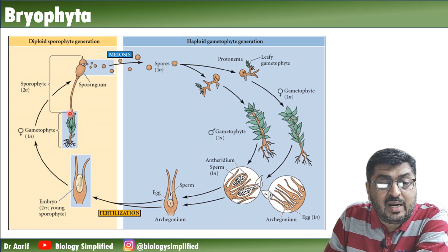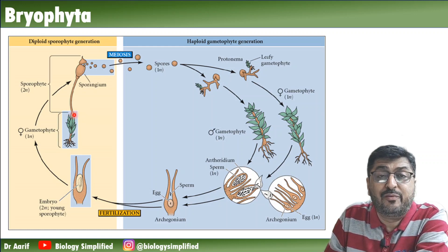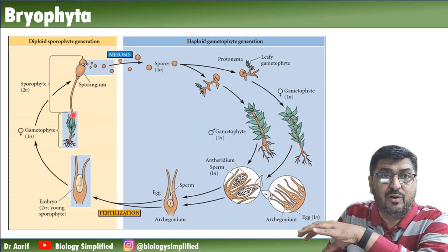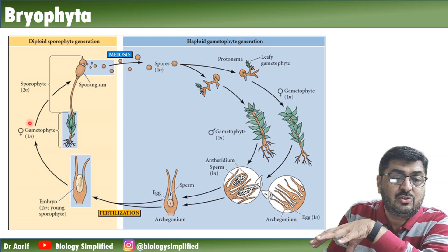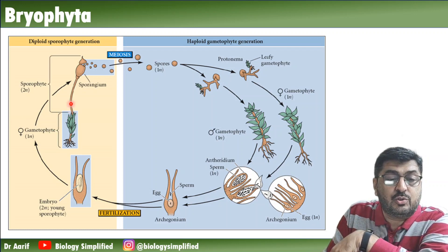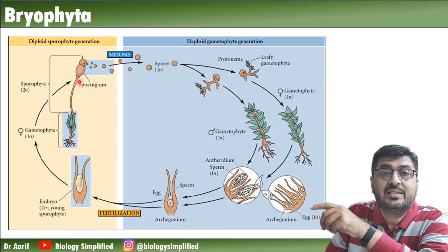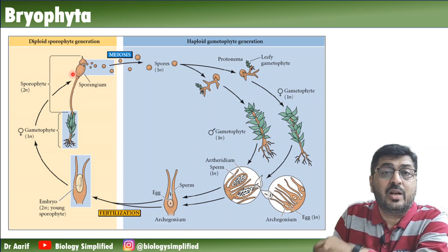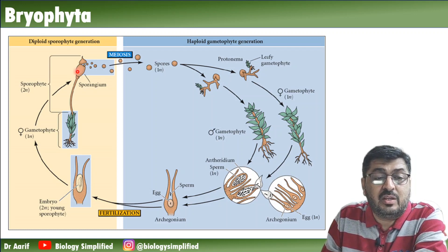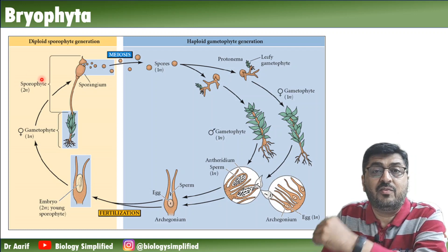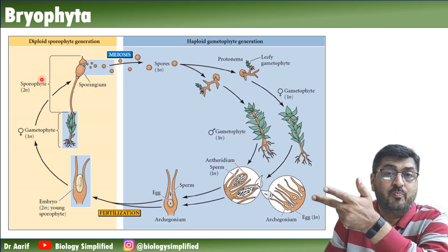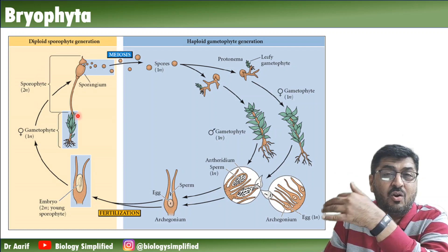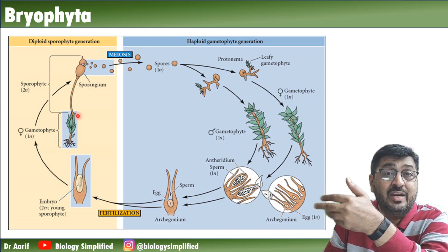The base part attached to the gametophyte is called the foot. The stalk portion is called the seta (S-E-T-A). The expanded portion at the top is called the capsule. So the three parts of the sporophyte are: foot, seta, and capsule. Is the sporophyte green or non-green? It is non-green, meaning it cannot do photosynthesis.